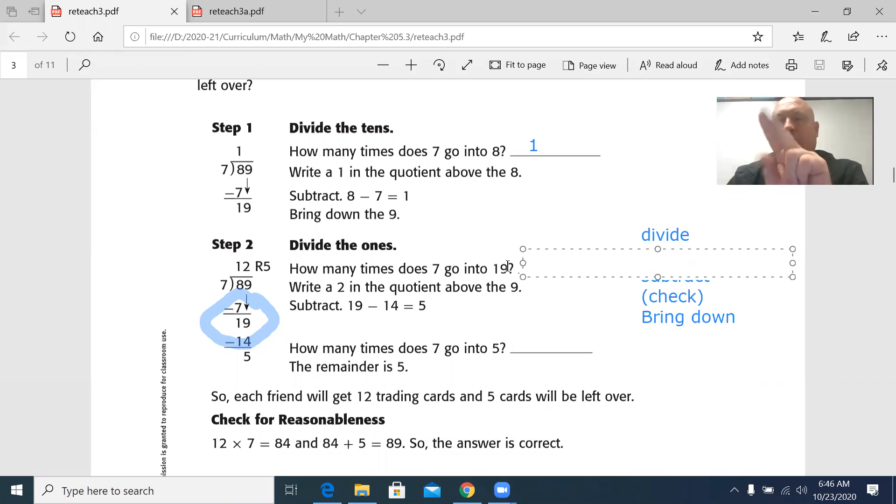So now I have to say, how many times is seven going into 19? And I could count. Seven, 14, 21. Too many. Two of them. 14. So it goes in twice. Now I multiply. I take the number I just wrote up there. Notice I wrote it over the ones. Because that's what we're dividing. Two times seven is 14. Now I subtract. 19 minus 14 is five. Does seven go into five? This is our checking. No.